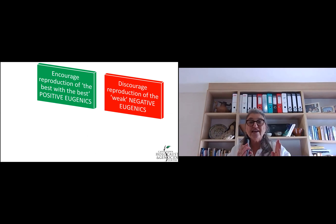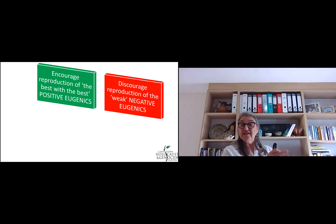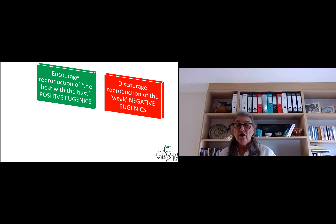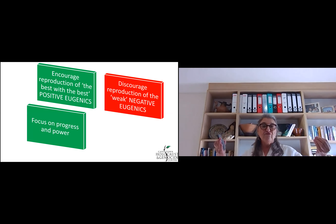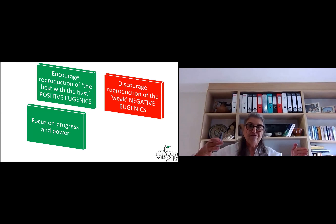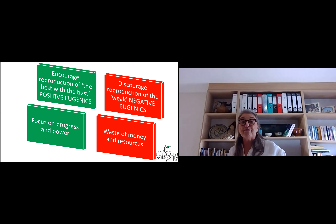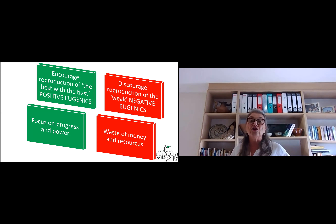Look at those two images: positive eugenics — breeding the best with the best — and negative eugenics — discouraging reproduction of those you don't consider to be good stock. Why would you do this? Well, if you've got the best of the best, you can focus on progress and power and build a good community. If you discourage reproduction of the weak, then you're not wasting money and resources on those who are not productive in society.